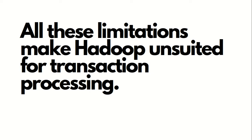All four of these limitations make Hadoop unsuited for transaction processing. That's why we are going towards specialized DBMS — columnar-oriented databases like Apache HBase. Apache HBase offers all the features that are missing in Hadoop, including random read/write access, lesser latency, and more. I hope you have understood why Hadoop is different from databases and why we are going towards specialized databases like Apache HBase. Thanks for watching — see you in the next video.